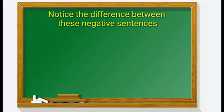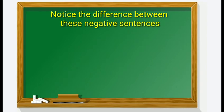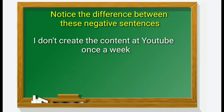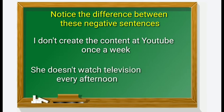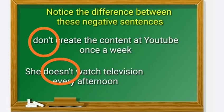Now notice the differences in negative sentences: 'I don't create content on YouTube once a week.' 'She doesn't watch television every afternoon.' For subjects I and you, add 'don't' to make a negative. For subject she/he/it, use 'doesn't.' The verb then goes back to verb one without S — for example, 'watch' not 'watches.'